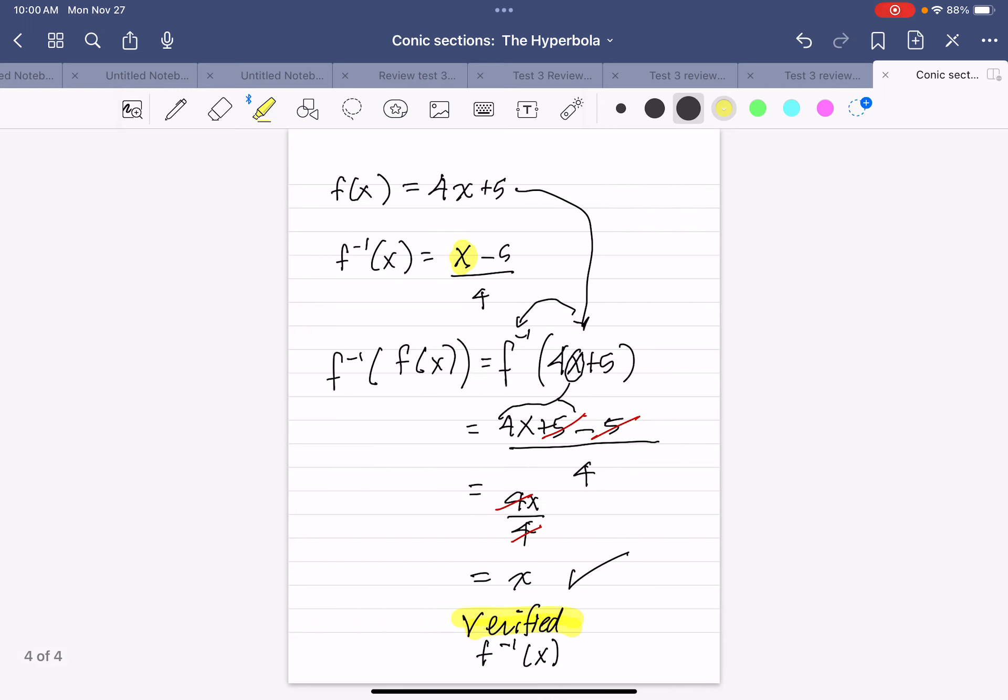Then we did it in the reverse order where we put f of x into f inverse. So here's f inverse, here's its x. So instead of its x, which was x - 5, we put this whole thing 4x + 5, and it came down to x. So that means we have verified that our inverse is correct.